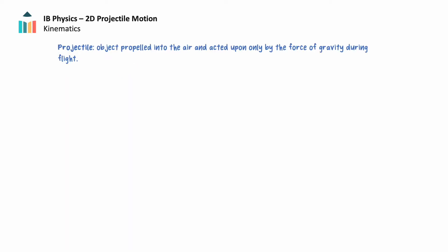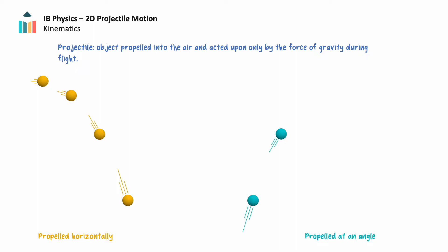A projectile is an object that is propelled into the air and is acted upon only by the force of gravity during its flight. Some projectiles move in two dimensions — vertically and horizontally — simultaneously. These projectiles may be propelled horizontally or propelled at an angle.